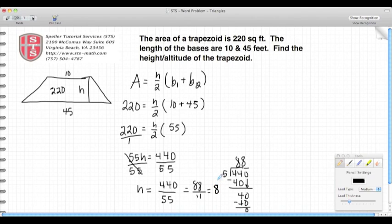So now I figured my height of being 8 for this particular problem. Now I want to go back and do the check, so I'm going to take the original problem. 220 is equal to—we said the height was 8 divided by 2, and then base 1 is 10, base 2 is 45.